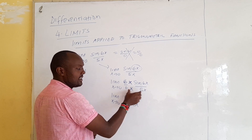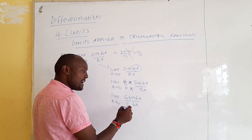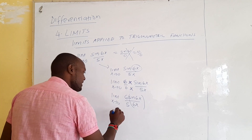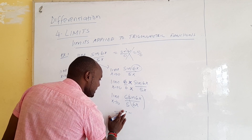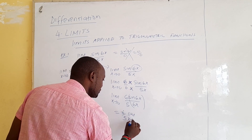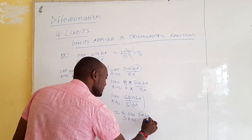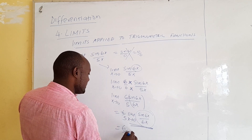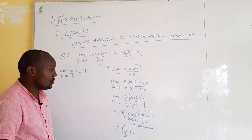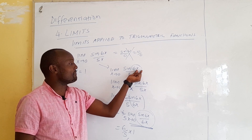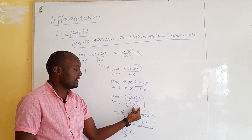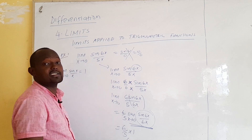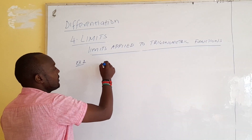So the expression becomes the limit as x approaches 0 of sin(6x)/(6x), times 6/5. Since the limit of sin(6x)/(6x) equals 1, we get 6/5 × 1 = 6/5. By ensuring sin(6x) is paired with 6x in the denominator, the limit of that part equals 1, leaving 6/5 as the answer.